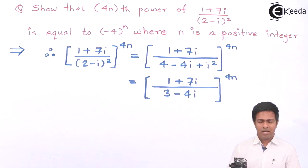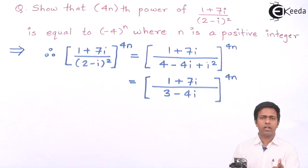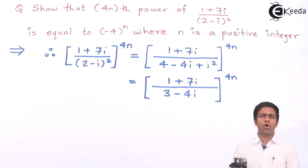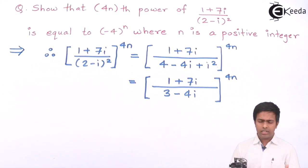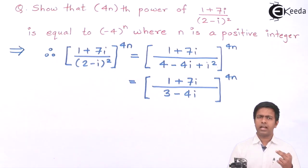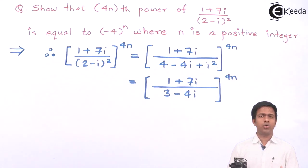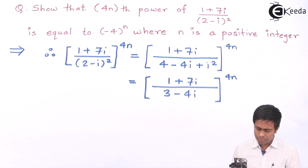Now we have a complex number in the denominator. To remove it we use rationalization — we multiply both numerator and denominator by the conjugate of the denominator.